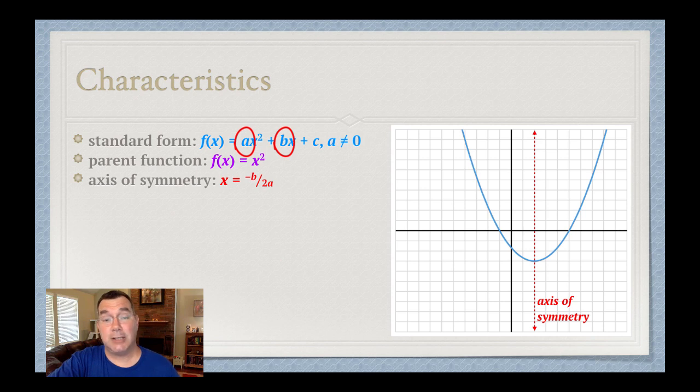Notice that once you find the axis of symmetry, that number is also going to be the x coordinate of the vertex. So we'll talk about that a little bit later. The y-intercept is going to be just that c value that's at the end of the function in standard form.